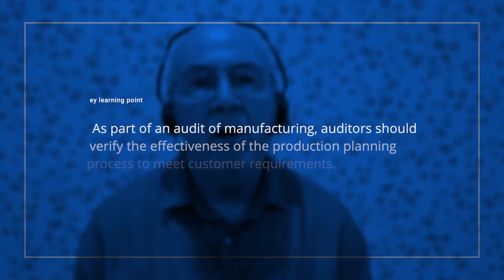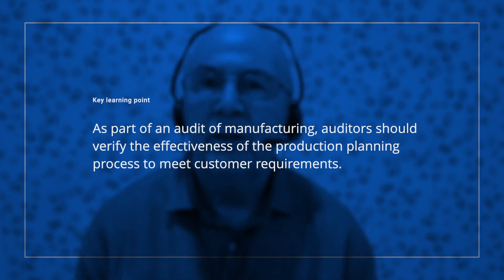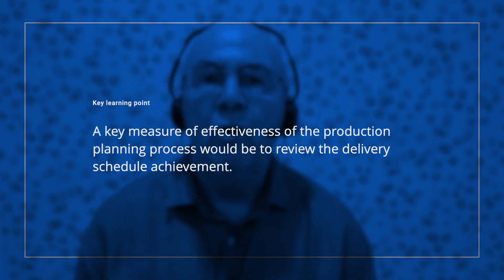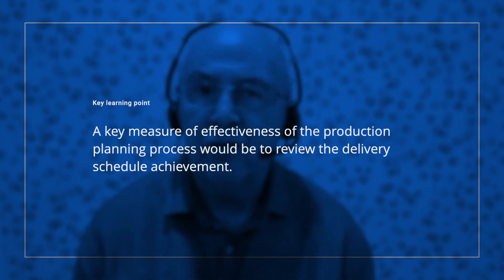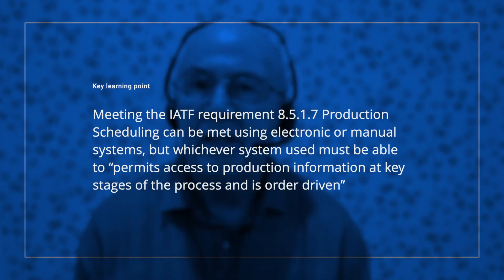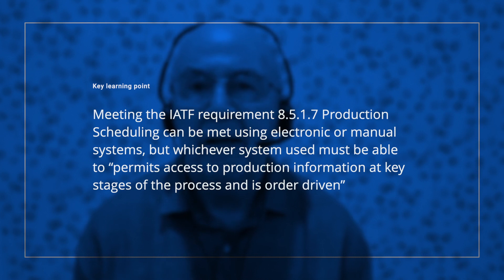So let's summarize the key learning points. As part of an audit of manufacturing, auditors should verify the effectiveness of the production planning process to ensure that the process output meets customer requirements. A key measure of effectiveness of the production planning process would be to review the delivery schedule achievement. Meeting the IATF requirement 8.5.1.7 related to production scheduling can be by electronic or by using manual systems.